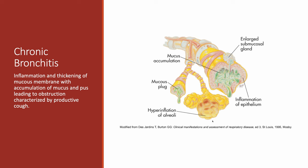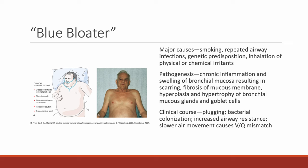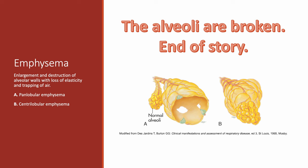Chronic bronchitis looks very similar to asthma, except there is no mast cell degranulation. Instead, there is inflammation of the epithelial layer producing more mucus, mucus plugging, and hyperinflation of the alveoli. The blue bloater is the chronic bronchitis patient, but that rarely occurs independent of emphysema. In emphysema, the alveoli are broken — they move air, but air gets trapped. The whole alveolar unit can't produce any gas exchange.